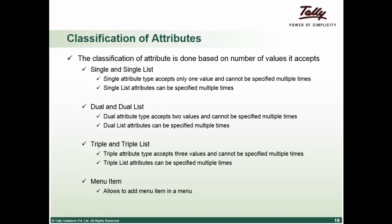Then we have dual and dual list. Dual type attribute accepts two values and cannot be specified multiple times in the same definition. For example, a repeat attribute at part level can be specified only once and takes two parameters, that's the line name and the collection name.